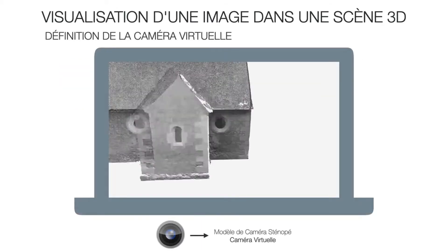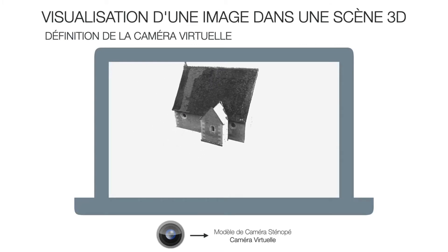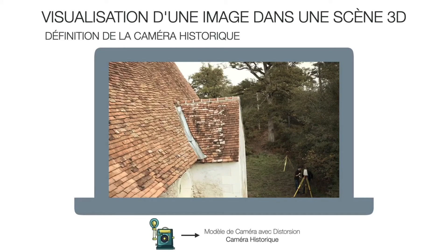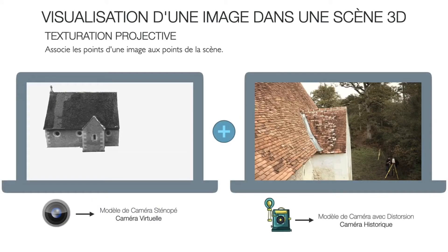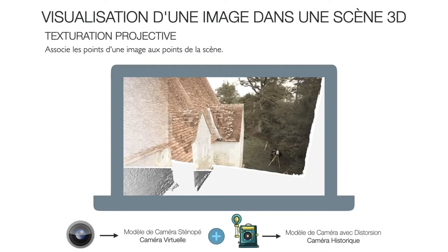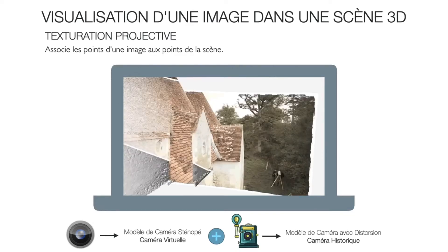We define two cameras in the 3D environment. A view camera allows the user to move through the scene; this camera is generally rendered with the traditional graphics pipeline, which applies a pinhole camera model. On the other hand, a historical camera is an estimate of the camera that was used to take the historical image. Since a photograph acquisition process may exhibit small to severe distortion — a geometric deviation from the ideal pinhole camera model — the historical camera is better defined as a distorted camera model. To visualize the picture in the 3D environment, the technique of projective texturing can be used, mapping each point on the image to a point in the 3D scene. For a pixel-accurate reprojection, the view camera can be placed at the same position as the historical camera, and a wider zoom allows visualization of the 3D model around the photograph as extra context.